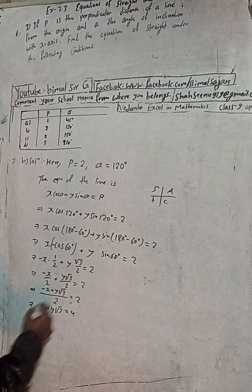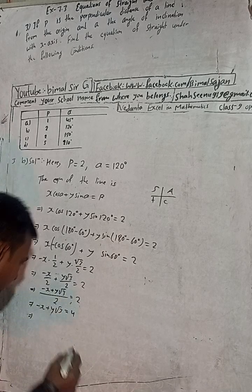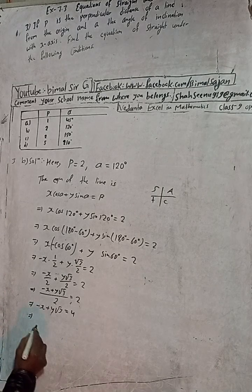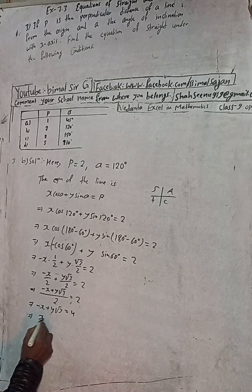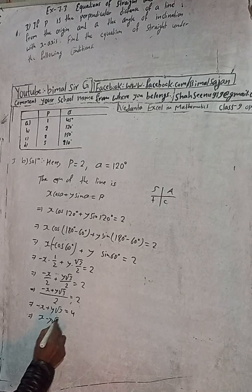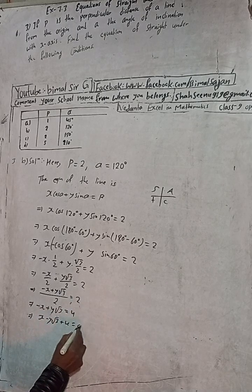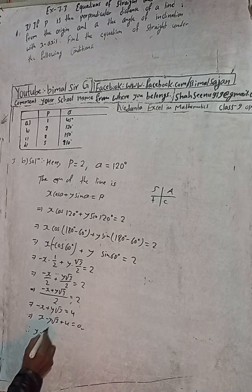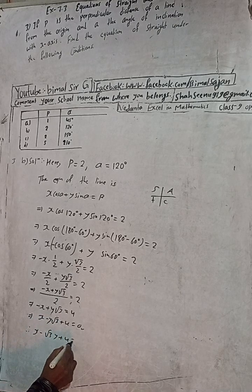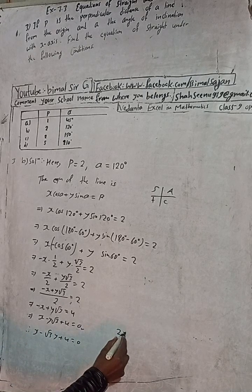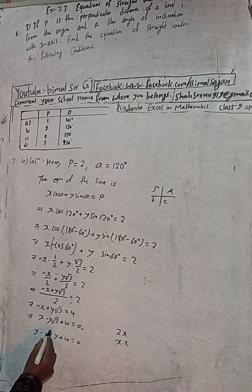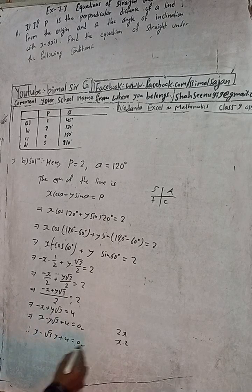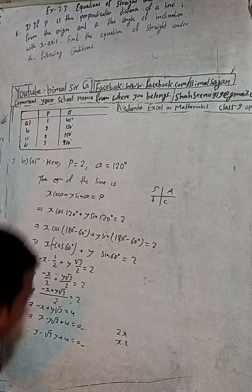Taking the minus to the right side: +x − y√3 + 4 = 0, i.e., x − √3·y + 4 = 0. The book answer is x − √3y + 4 = 0, which is the same. So the solution to 3B is x − √3y + 4 = 0.